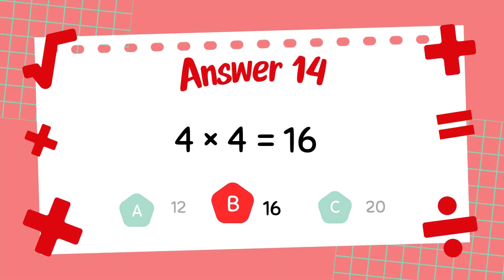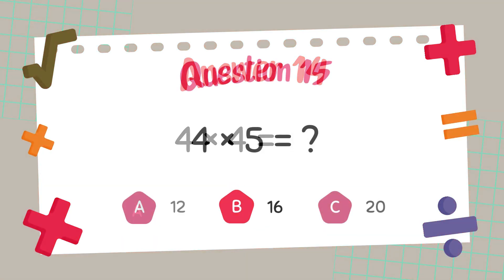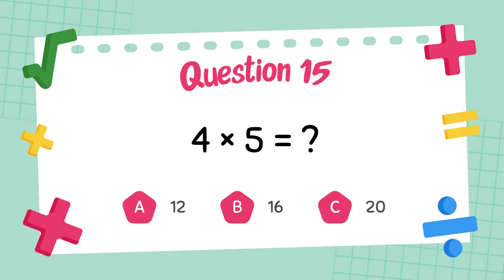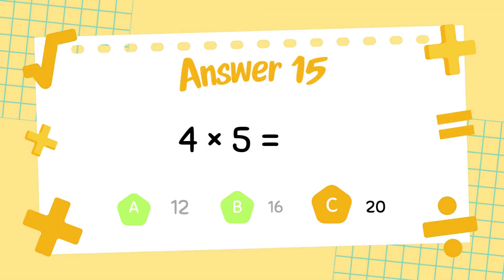The answer is 16. What is 4 times 5? The answer is 20.